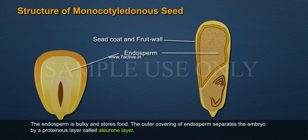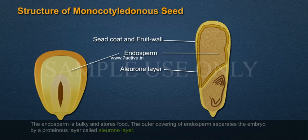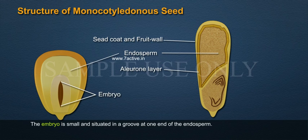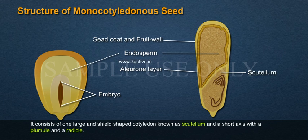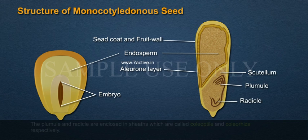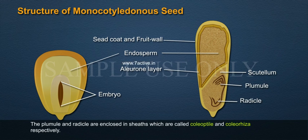The outer covering of the endosperm separates the embryo by a proteinous layer called the aleurone layer. The embryo is small and situated in a groove at one end of the endosperm. It consists of one large shield-shaped cotyledon known as the scutellum, and a short axis with a plumule and a radicle. The plumule and radicle are enclosed in sheaths called the coleoptile and coleorhiza respectively.